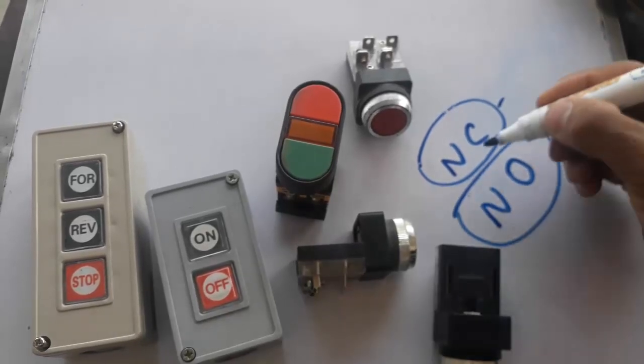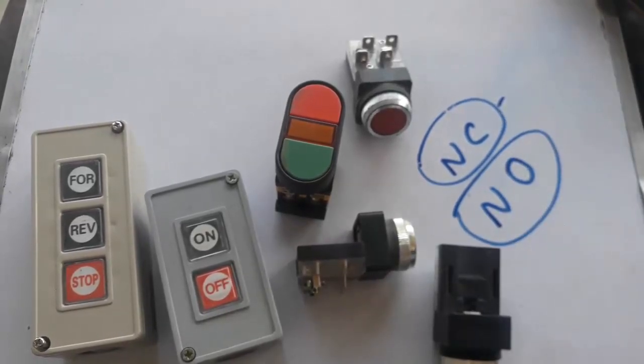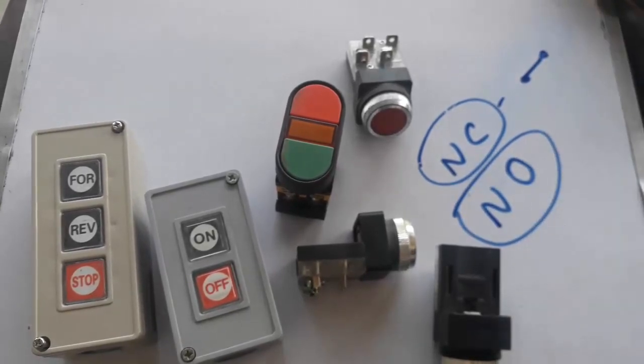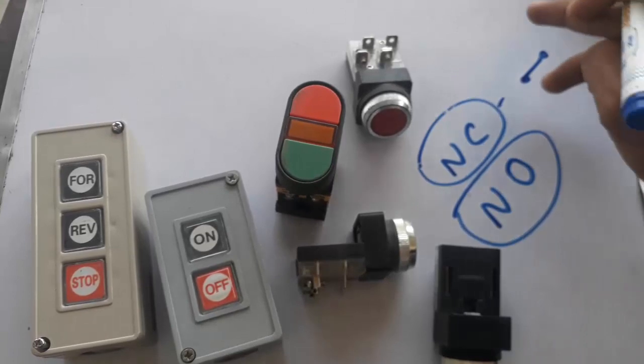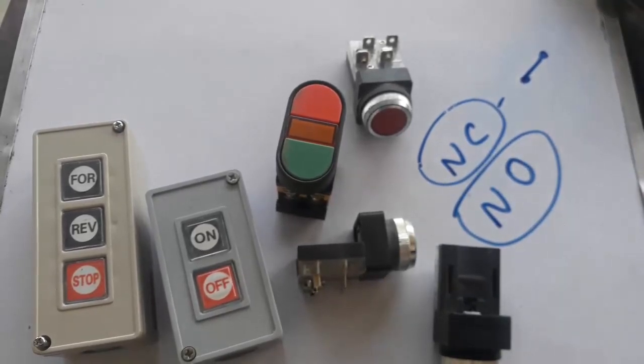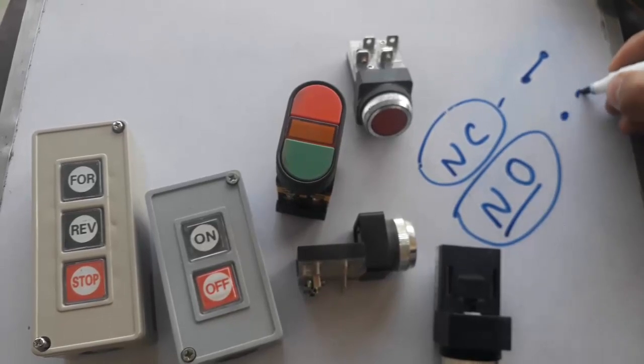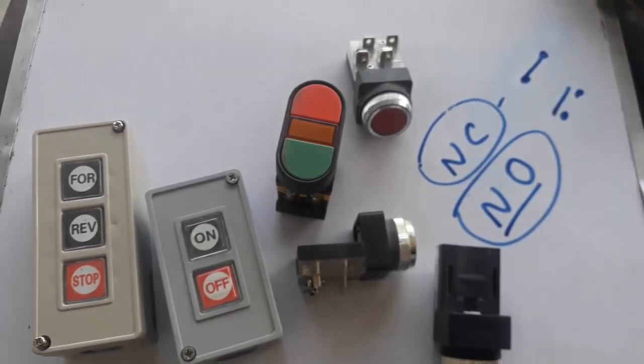So basically, NC switch means normally closed. It means that the contacts are normally closed with one another, and when we push it, it will make an open circuit. NO means normally open circuit, which means that if we push it, it makes a closed circuit.